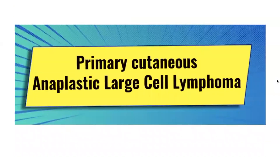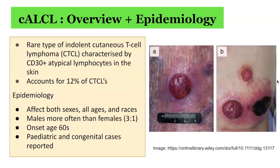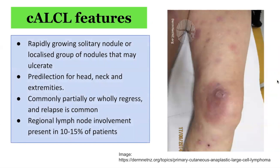Primary cutaneous anaplastic large cell lymphoma is comprised of large cells with anaplastic, pleomorphic, or immunoblastic morphology, characterized by expression of the CD30 positive antigen by the majority of tumor cells (greater than 75%). Patients should not have clinical evidence or history of mycosis fungoides. These lymphomas account for 12% of all cutaneous T-cell lymphomas, affecting both sexes, all ages and races, but tending to occur in adults with a male-to-female ratio of 3 to 1 and typical onset in the 60s. Most patients present with solitary or localized nodules or tumors, sometimes papules which develop ulceration; multifocal lesions are present in about 20% of patients. The skin lesions may show partial or complete spontaneous regression, and there is a predilection for the head, neck, and extremity areas.